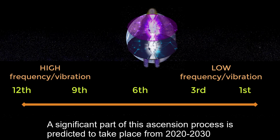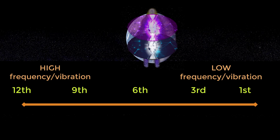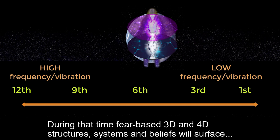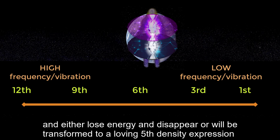A significant part of this ascension process is predicted to take place from 2020 to 2030. During this time, fear-based 3D and 4D structures, systems, and beliefs will surface and either lose energy and disappear, or will be transformed to a loving 5th density expression.